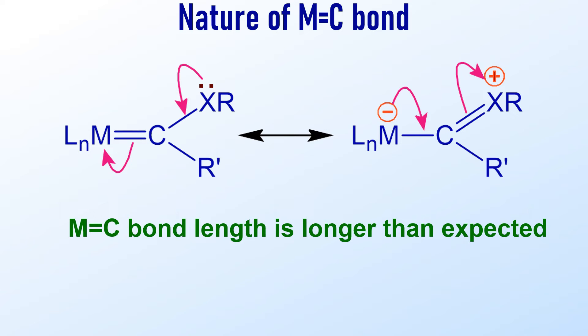Typically, a Fischer carbene is a hybrid of the following resonance structures. Hence, the metal-carbon bond length is greater than expected value.